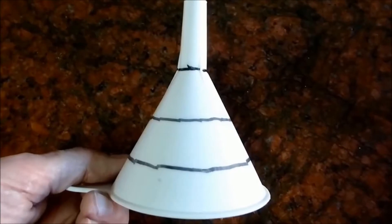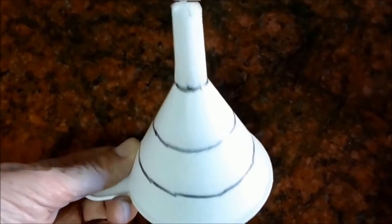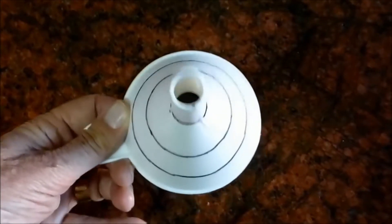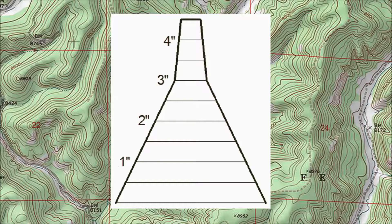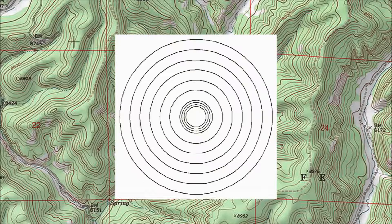If you turn the funnel so you can see it from the narrow end, those lines turn into circles. Suppose I set the funnel upside down on a counter and draw lines a half inch up, one inch up, an inch and a half up, and so on, a lot more carefully than I actually did. When I was done, from the side, the lines would look like this. And from above, the lines would look like this.